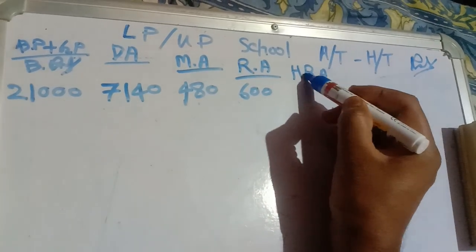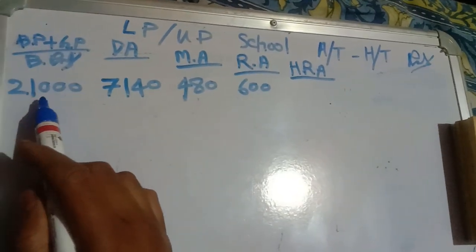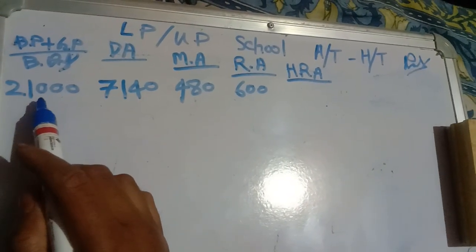HRA, Housing Rent Allowance. Basic ka seven percent.